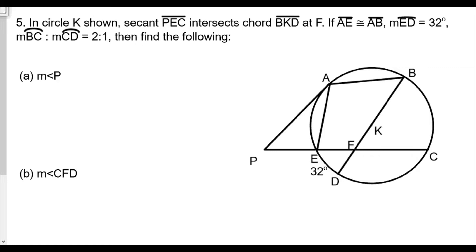Now keep in mind BKD is a diameter, so that's going to help us. AE is congruent to AB, so mark off that part there. The measure of arc ED is 32 degrees, and the measure of arc BC to CD is a ratio of 2 to 1, so BC will be 2x and CD is 1x.